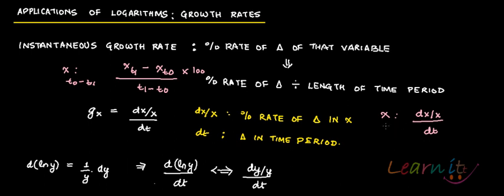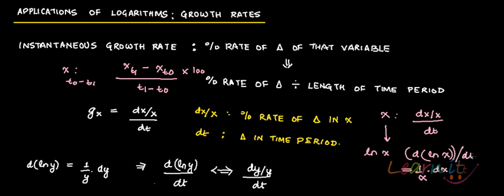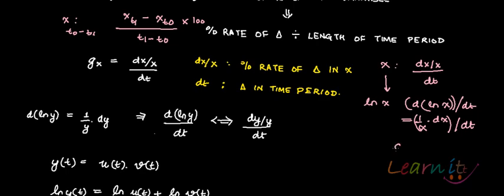For example, you want to find out the growth rate using log of X. What you do is convert the function into log of X, then take the derivative or the differential of log of X, which is nothing but one upon X times dx. That is the numerator. Then you divide this by dt. So that would mean dx by X divided by dt, which gives the percentage change in the variable X.